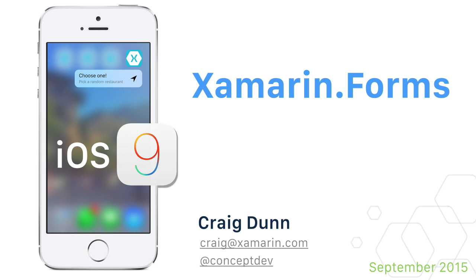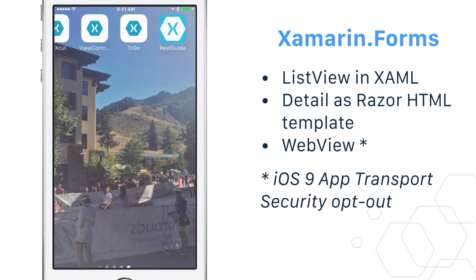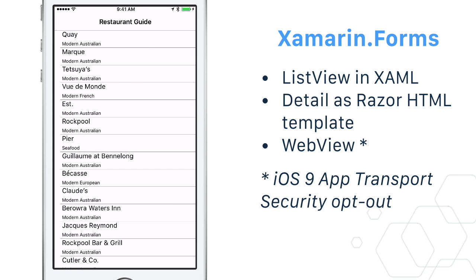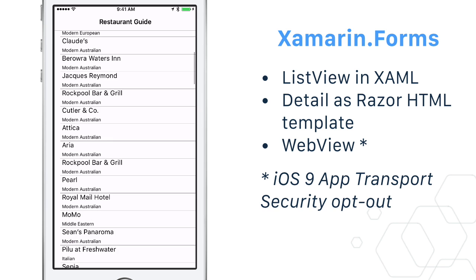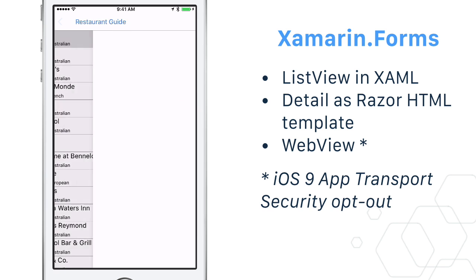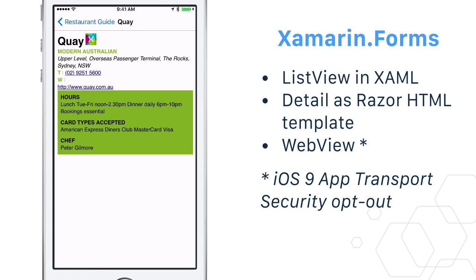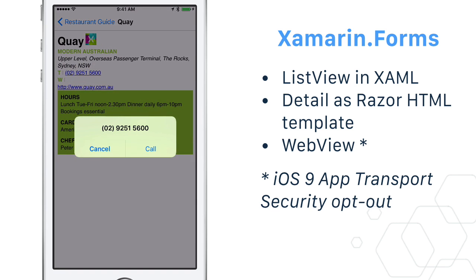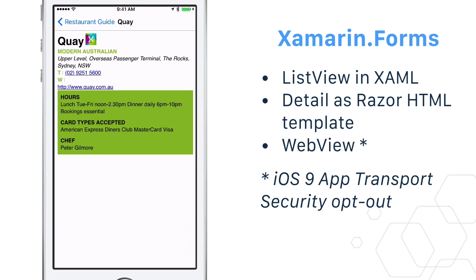Here's a quick hack I threw together to show iOS 9 platform-specific features added to a Xamarin Forms app. The basic sample has a XAML list view and uses a web view to display the detail info. I needed to opt out of iOS 9 app transport security for the links to work.